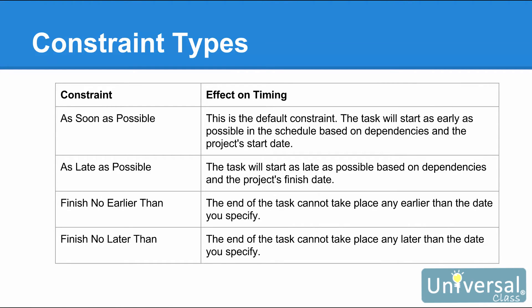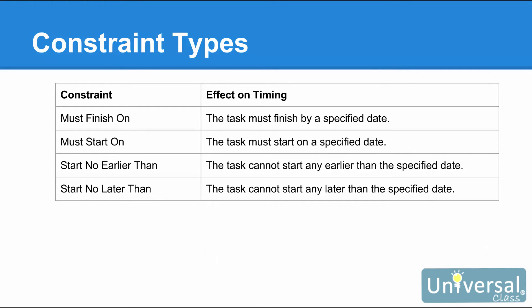Before we teach you how to apply constraints, let's look at the possible constraints you can put on a task. As Soon As Possible is the default constraint — it will start as early as possible based on dependencies and the project's start date. As Late As Possible means the task will start as late as possible. Finish No Earlier Than means the end of the task cannot take place earlier than the date you specify. Finish No Later Than means the end cannot be any later than the date you specify. Must Finish On means the task must finish by a specified date. Must Start On means the task must start on a specified date. Start No Earlier Than means the task cannot start earlier than the specified date. Start No Later Than means the task can't start any later than the date you specify.